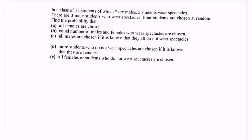Hello everyone. In this video, I'm going to discuss an example for probability. The question states: in a class of 15 students, 7 are male, 5 students wear spectacles, and there are 3 male students who wear spectacles. 4 students are chosen at random. Find the probability for the questions below.